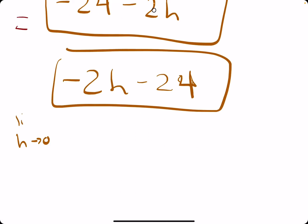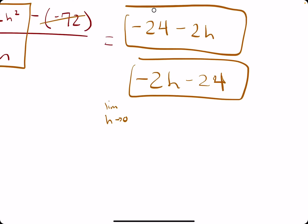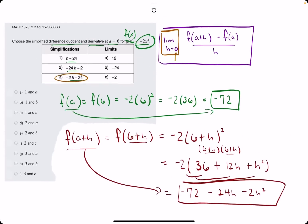and we evaluate the limit as h goes to 0 of this, we just plug in 0 in place of h. So what we get is just 0 minus 24, or negative 24.